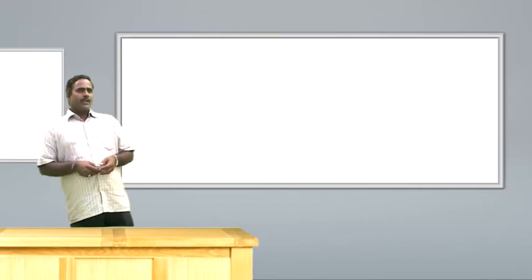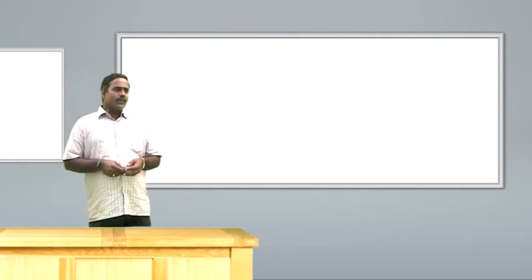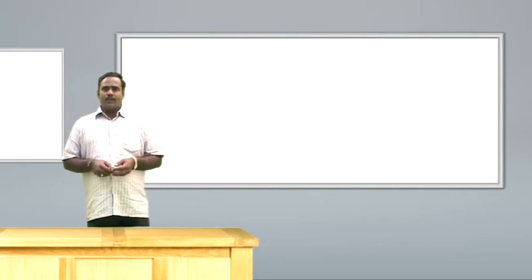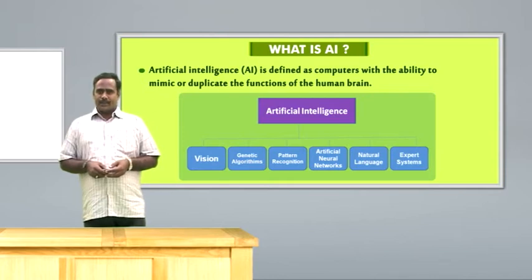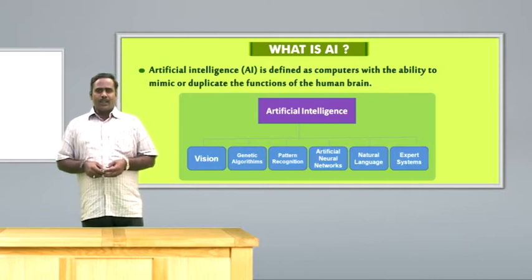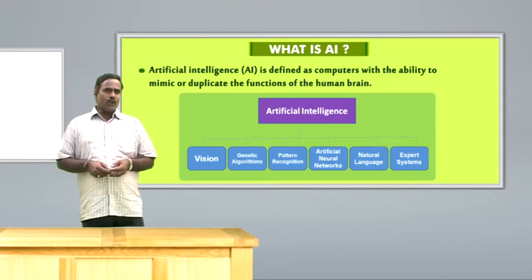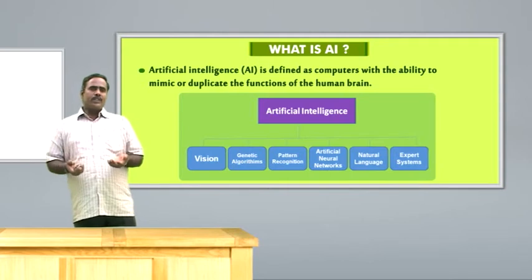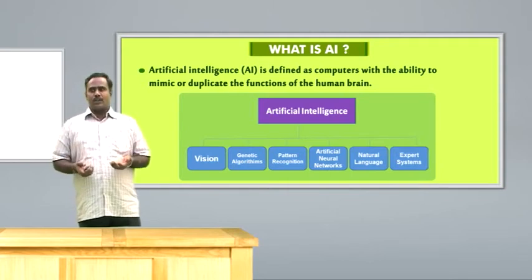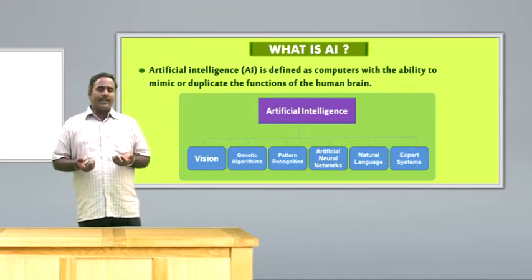Before discussing in detail about the expert system, we will see what is artificial intelligence. Artificial intelligence, otherwise called AI, is defined as computers with ability to mimic or duplicate the functions of the human brain. Normally, AI will produce machines for producing decisions, knowledge, problem solving and other important components for the benefit of human beings.